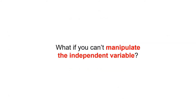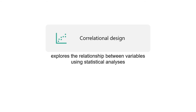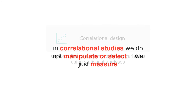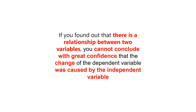What if you can't manipulate the independent variable? Correlational design may be used where no causal direction is specified or only very modest cautionary causal inferences are made. According to Tuchman and Harper, a correlational design explores the relationship between variables using statistical analysis. A researcher collects two or more sets of data from a group of subjects to determine the relationship between them. In correlational studies, we do not manipulate or select — we just measure. If a relationship is found between two variables, we cannot conclude with great confidence that the change in the dependent variable was caused by the independent variable, because it could be the other way around. The two variables are simply correlated, and correlation does not imply causation.